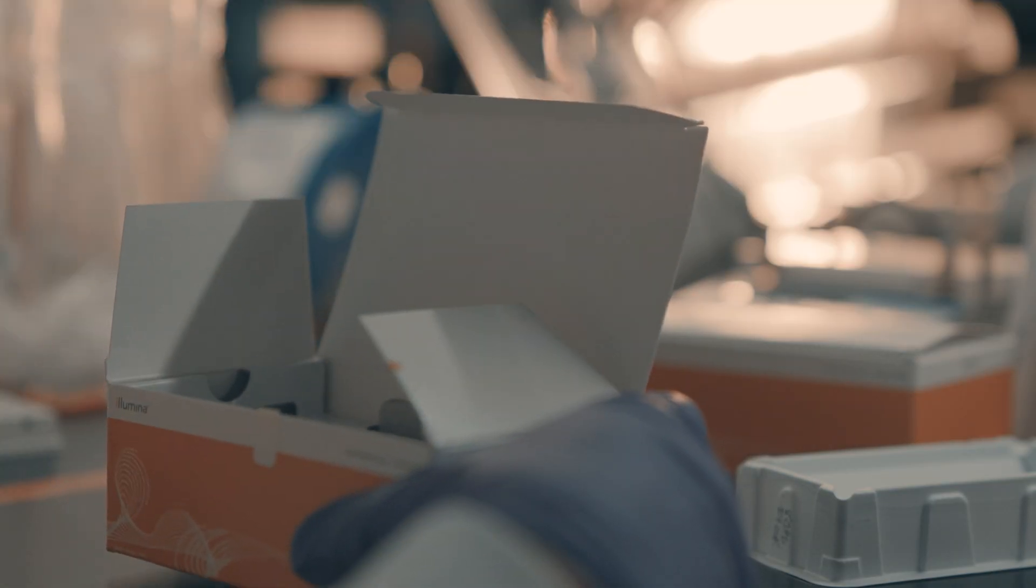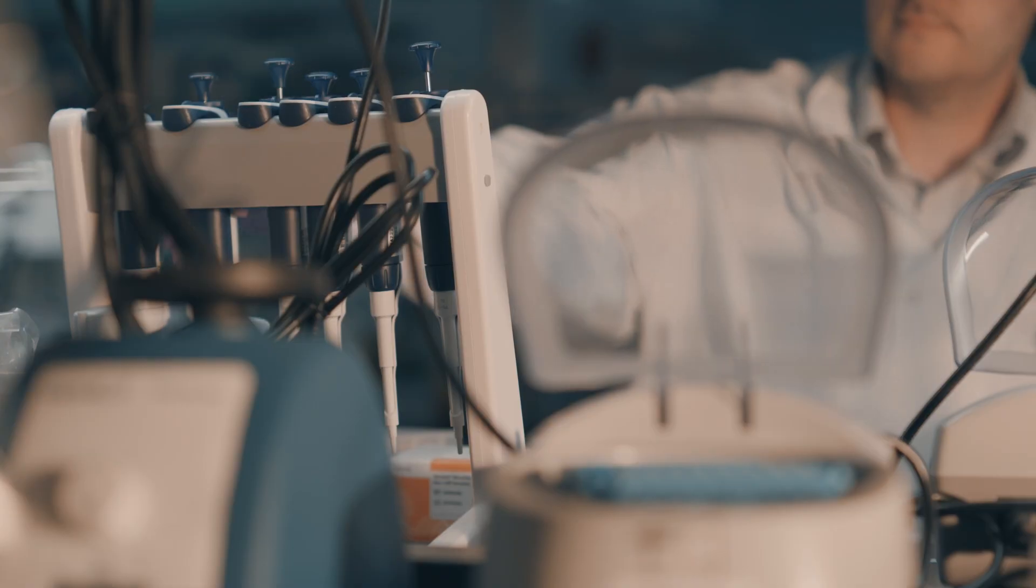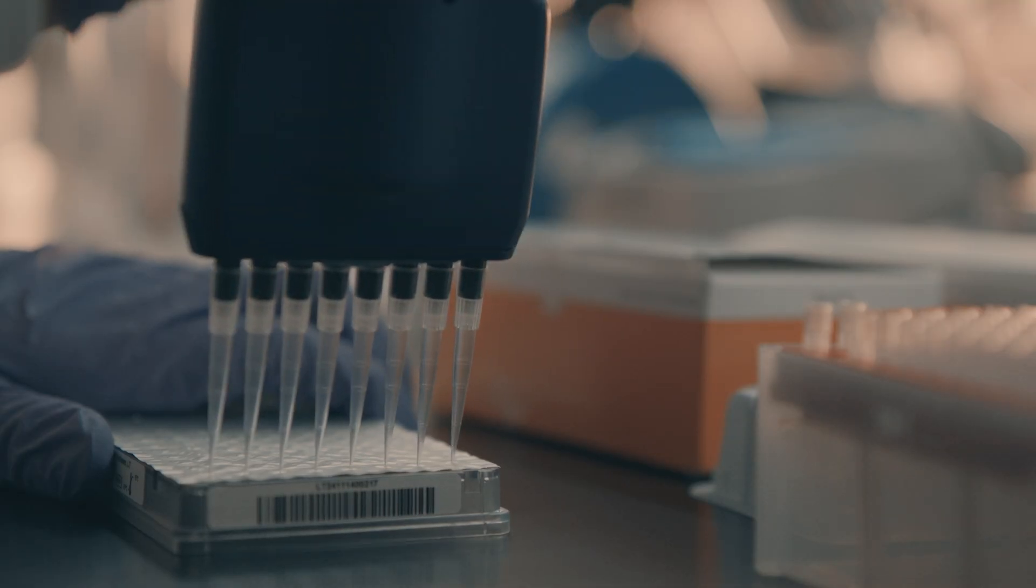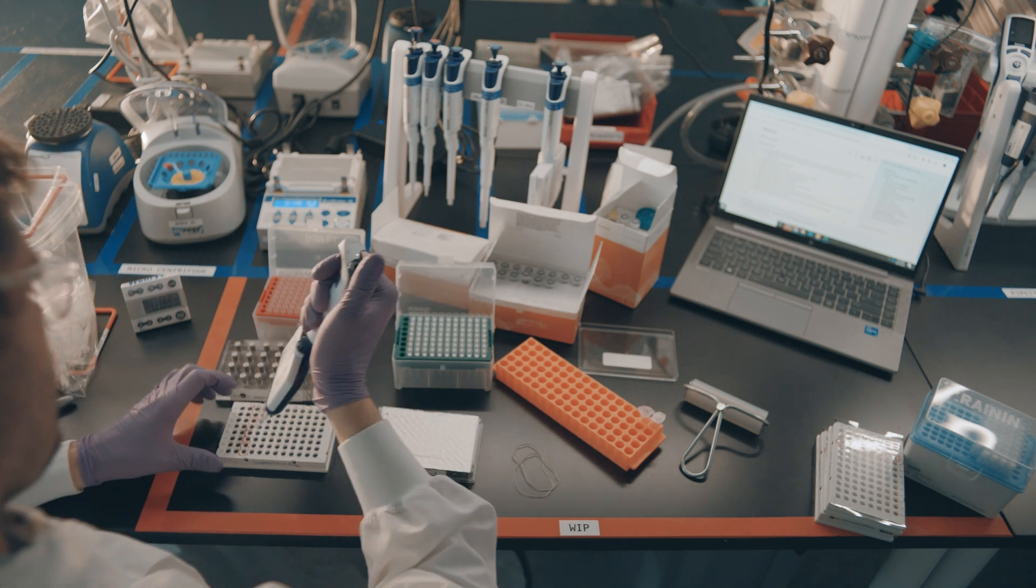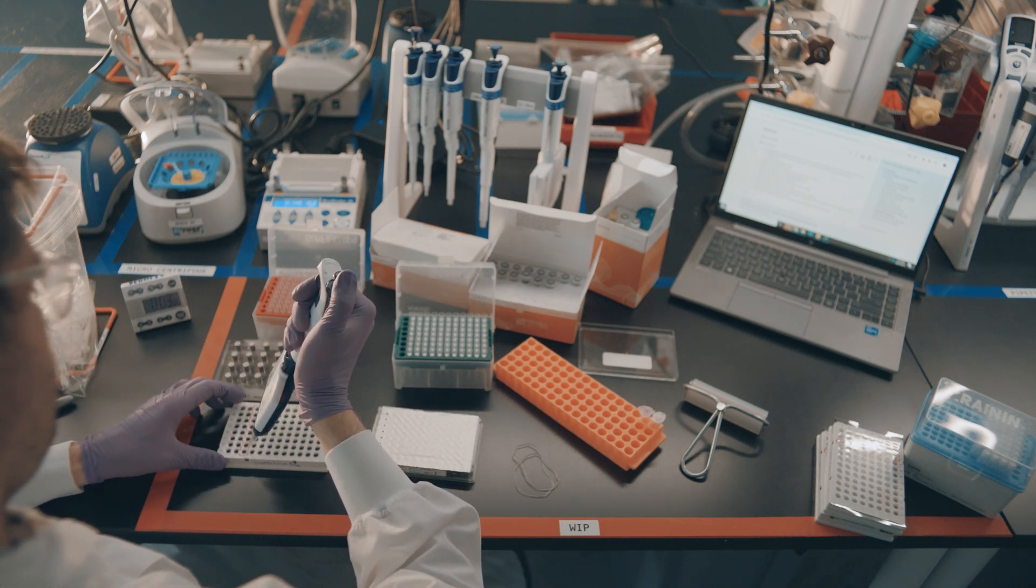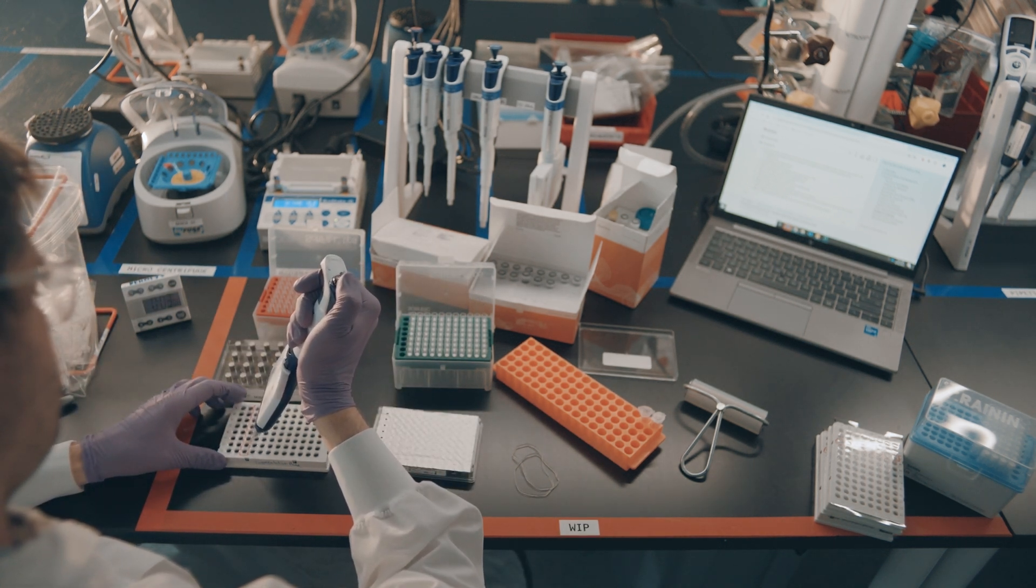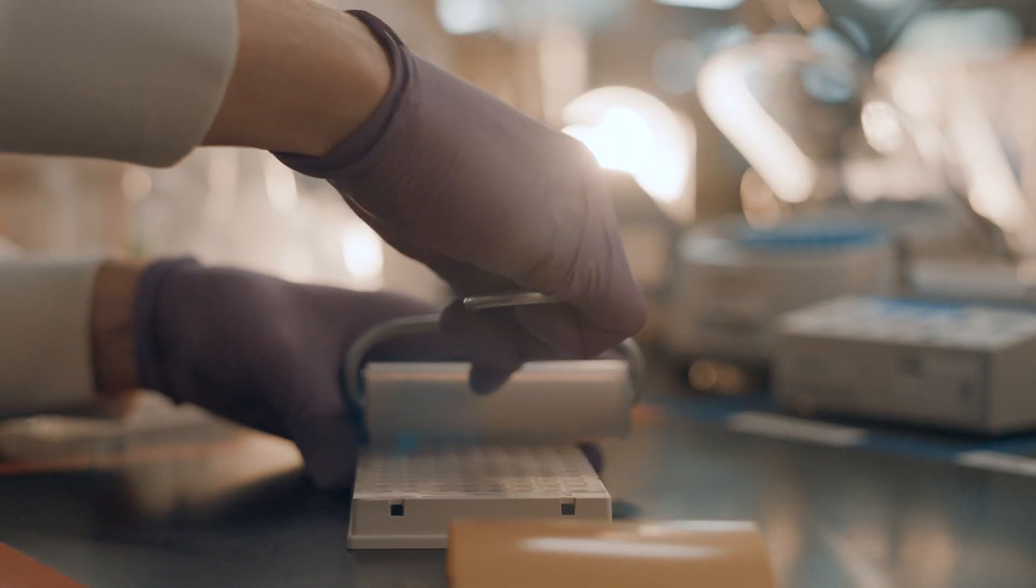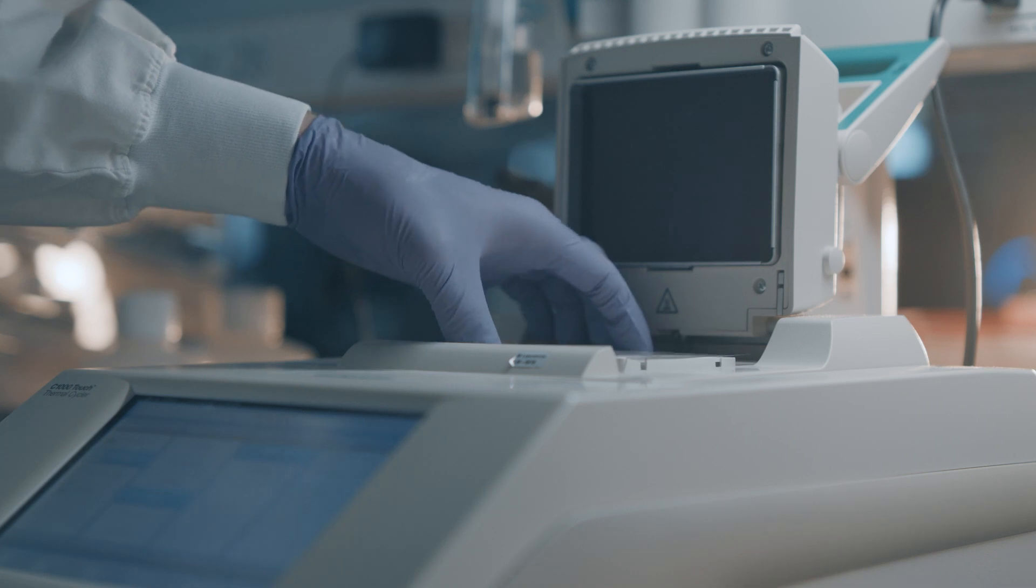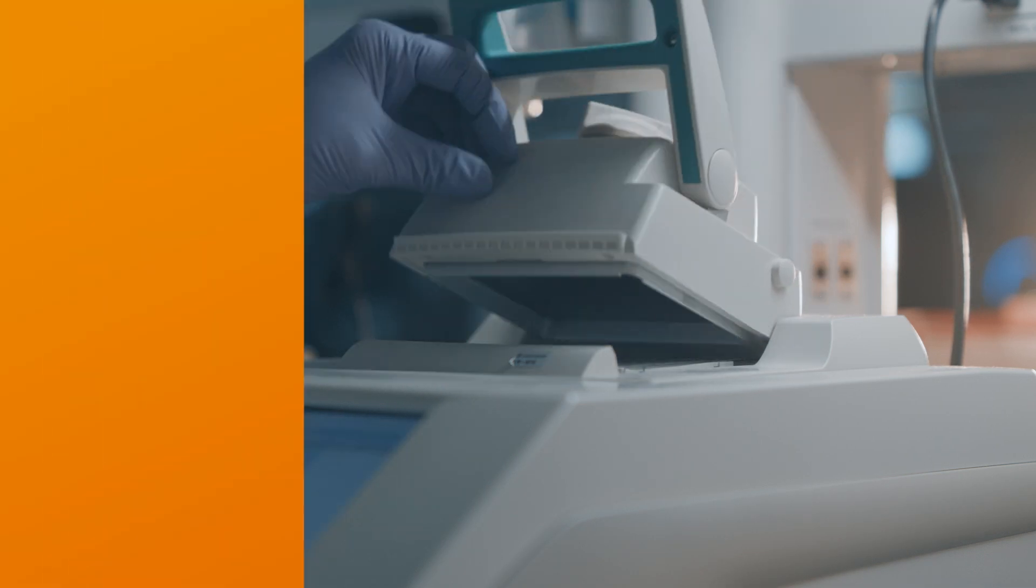After the wash steps are complete, users can add their indexes from the index plate, piercing the foil one column at a time. The user should be careful to not contaminate when piercing the index plate, as this can lead to inaccurate results. After indexes and PCR mix are added to the reaction, the user can transfer their plate back to the thermal cycler for indexed PCR.